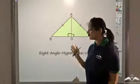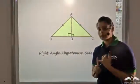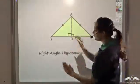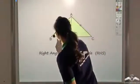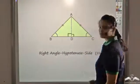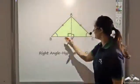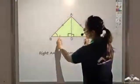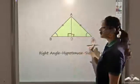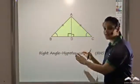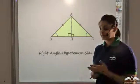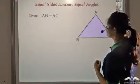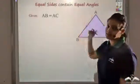Now if the triangles are congruent, then by CPCT I know that the corresponding parts should also be equal. So if this triangle is congruent to this triangle, then angle B would be equal to angle C by CPCT. It's not only for this triangle but in general: whenever you have two equal sides in a triangle, two angles will also be equal. Let us try to prove this — we say equal sides contain equal angles.